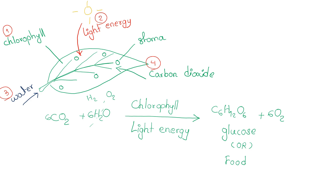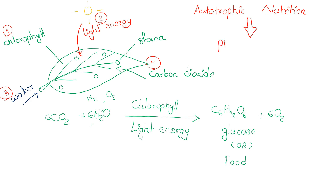So the plant can produce glucose and other nutrients. The plant nutrition will take place through autotrophic nutrition. Auto means self, trophic means feeding. Autotrophic nutrition can be achieved through the process of photosynthesis.